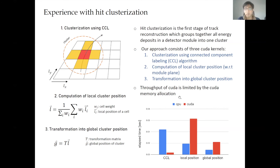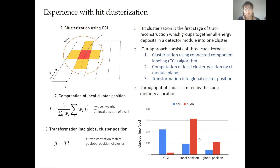This figure shows how those three different functions take time inside the CPU and CUDA implementations. In the case of CCL, the computing time for CUDA is much faster than CPU, but for the local position and global position calculation, CUDA takes longer than CPU because of the number of CUDA memory allocations.